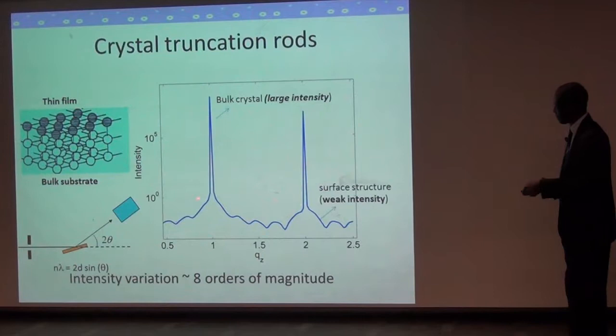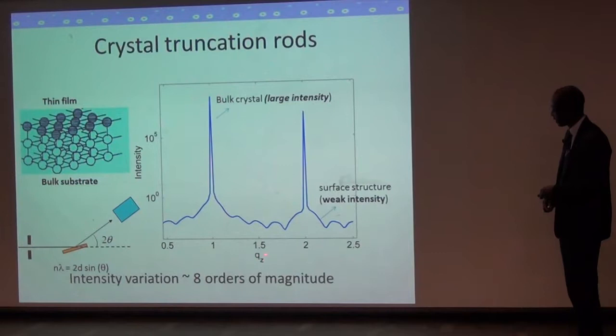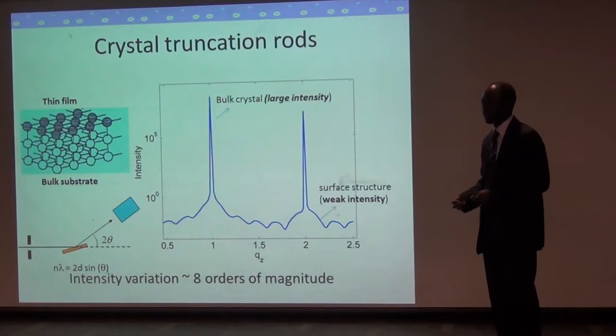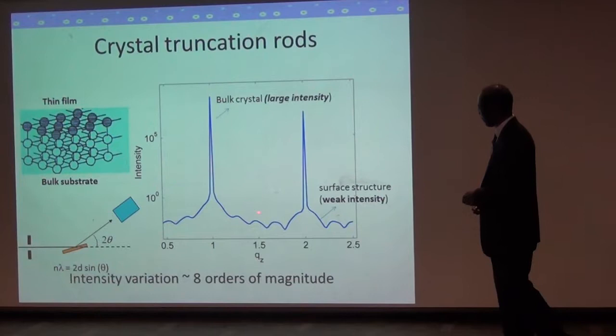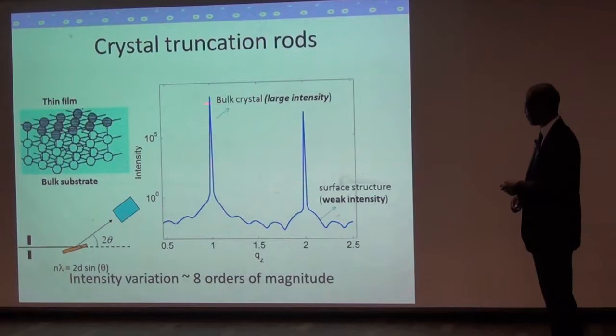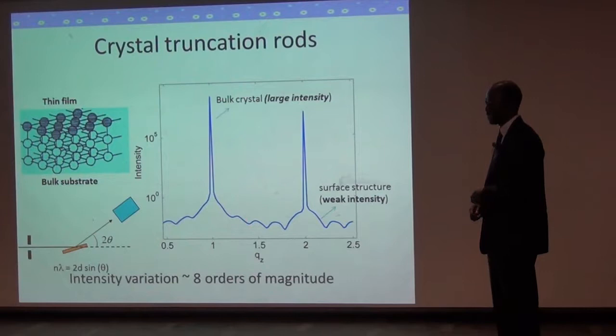This is what a typical measurement looks like along what are known as crystal truncation rods for a thin film grown on a substrate. We plot the intensity we measure as a function of angle represented by the reciprocal space vector Qz, defined in terms of the substrate on which the film lies. At integer values of Qz we have these very sharp Bragg peaks coming from the substrate, and in between these peaks are these very weak intensities which contain all the information related to the thin film, surface, and interface. It's very important that we measure these intensities very precisely to get good enough data to determine the structures of our films and interfaces.